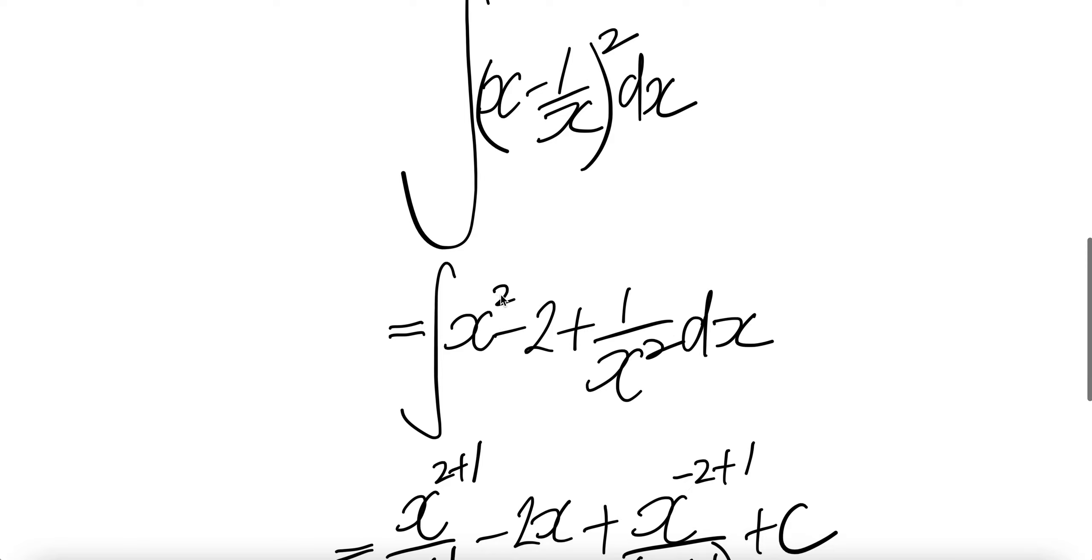Square them out: x squared minus twice across them, minus 2, plus 1 over x squared. The square of 1/x is 1 over x squared.